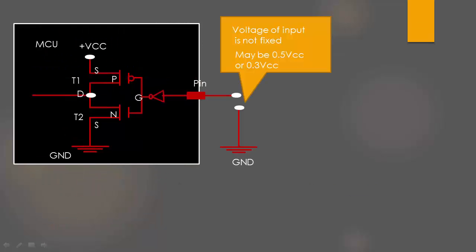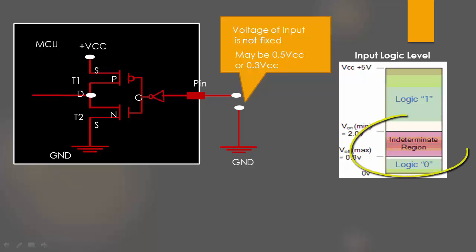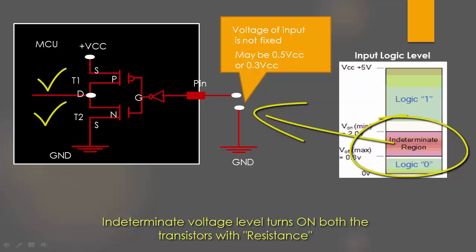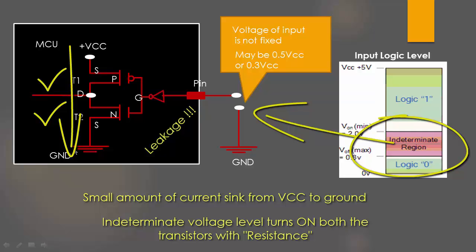Let's come to the floating state. In this case the pin input voltage is not fixed. So due to the circuit noise what actually happens is that the input voltage may toggle between 50% or 70% of the VCC to say 30% of the VCC. That means the voltage on this pin will be somewhere in this region which actually turns on both the transistors with resistance. So as a result small amount of current will sink into the ground taking this path.